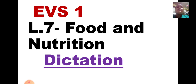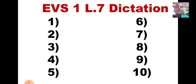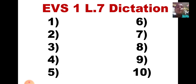Now, what you are going to do? You are going to write the numbers 1 to 10. I am going to dictate to you 10 words and each word I am going to repeat 3 times. I am going to repeat each word 3 times. So we write the numbers 1 to 10 and listen to me carefully. And we will start our dictation test of Lesson No. 7 today.